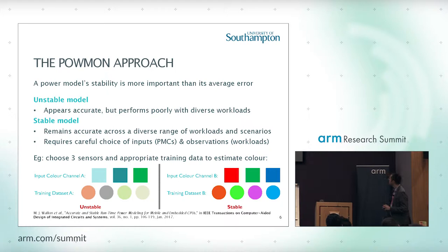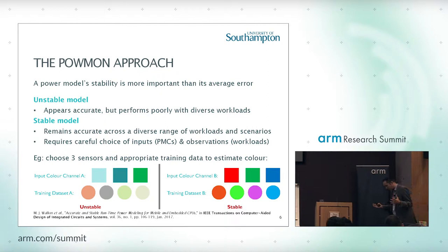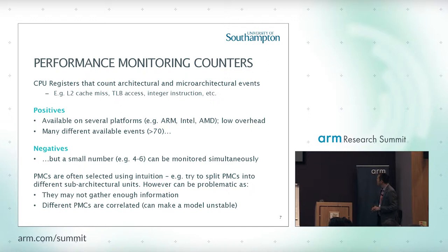To achieve stability requires both careful choice of inputs — the performance counters we use — and the training workloads. A nice analogy: if you were building an image sensor and had to pick three input channels, choosing inputs that aren't representative of the data would produce biased results. More stable inputs like RGB sensors are appropriate. Similarly, you want your training data set to fully test a diverse set of options that the system is likely to see in the real world.